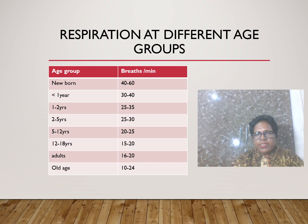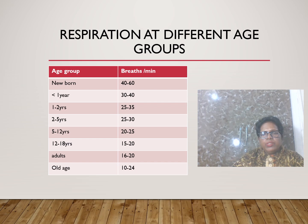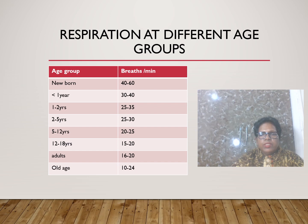Respiratory rate by age group: newborn 40–60/min; less than 1 year 30–40/min; 1–2 years 25–35/min; 2–5 years 25–30/min; 5–12 years 20–25/min; 12–18 years 15–20/min; adult 16–20/min; old age 10–24 breaths per minute.